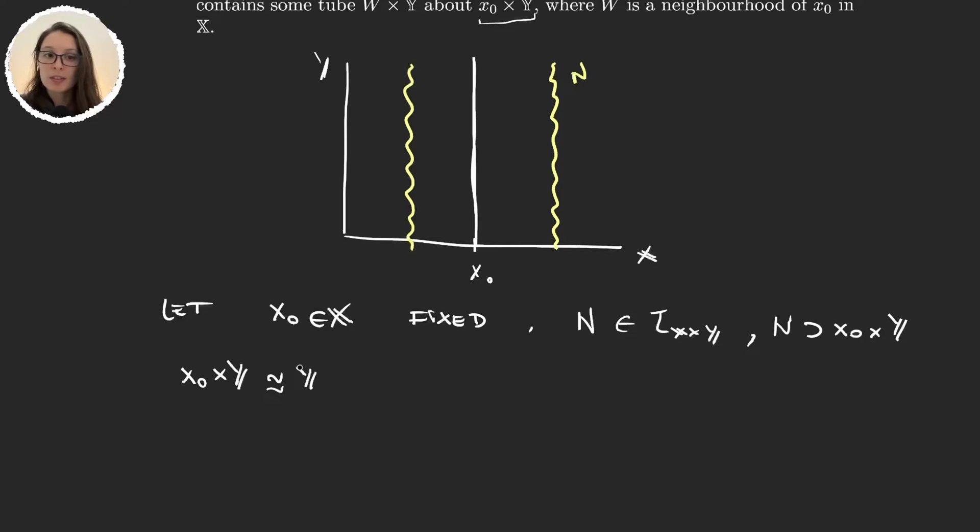And so given that Y is compact, then x₀ times Y is also compact. And because it's compact given any cover of x₀ times Y, there will exist a finite sub cover.